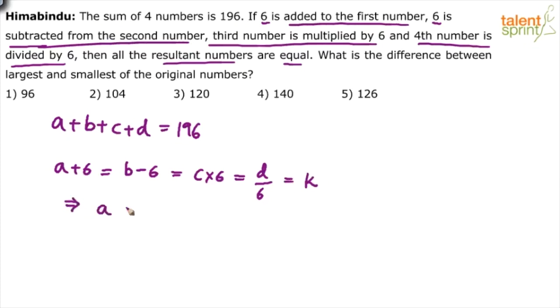Now from this, can I say A is equal to K minus 6, B is equal to K plus 6, C is equal to K by 6 and D is equal to 6K. So the advantage that we have is all A, B, C, D have now been formed in terms of K.